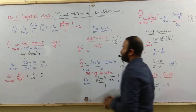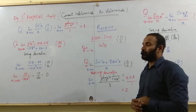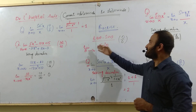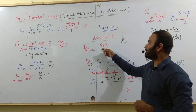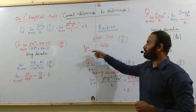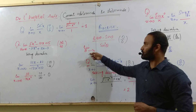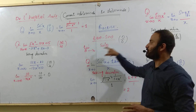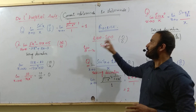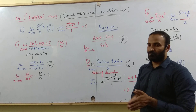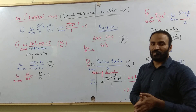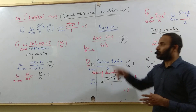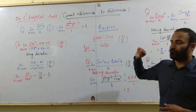A question for practicing: the limit of (tan θ minus sin θ) divided by sin³θ, when θ approaches to 0. It is an indeterminate 0 over 0 form when you put the limit. You can simplify this form for practice using L'Hôpital's rule.